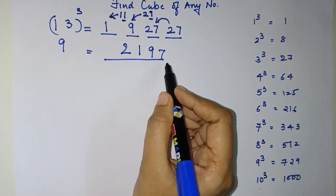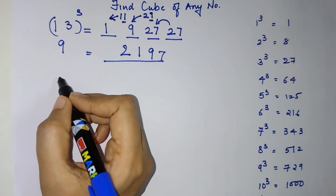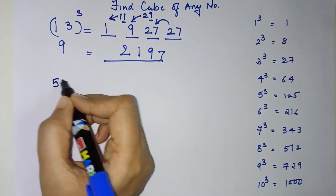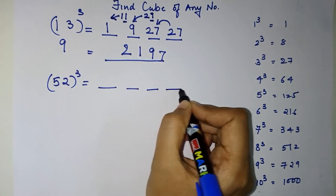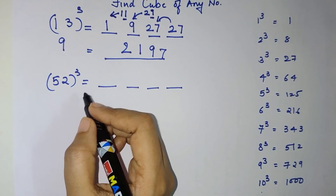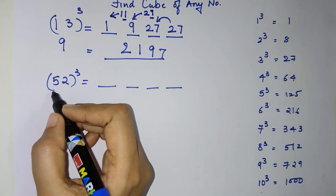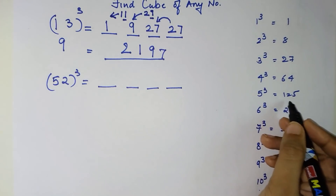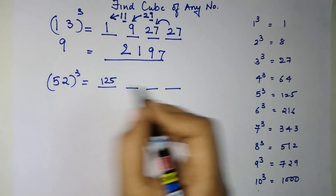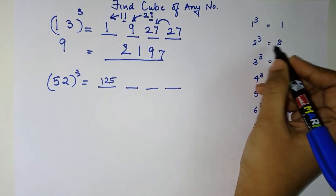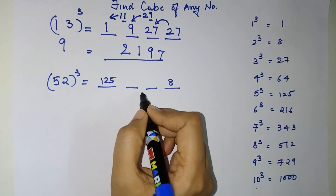You can verify this with a calculator. Now let's look at a bigger number — finding the cube of 52. Again we divide the answer into four parts. The first part is the cube of 5: 5³ = 125, and the last part is the cube of 2: 2³ = 8.